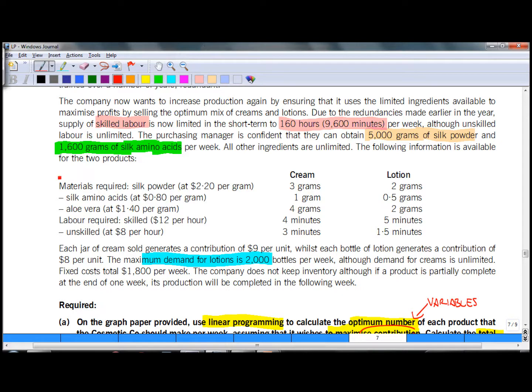Information in the cost card could be used to calculate the unit contribution. However, as I can see, unit contribution is given. It's 9 dollars per unit of cream and 8 for lotions. So we don't need to calculate that. In addition, we have some information about fixed costs, which is really irrelevant information because that has no impact on your contribution.